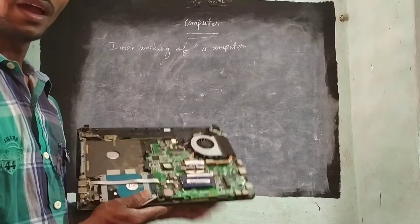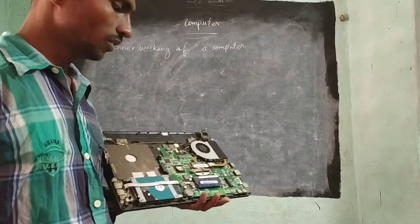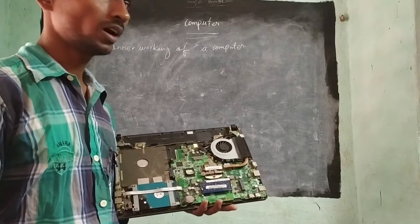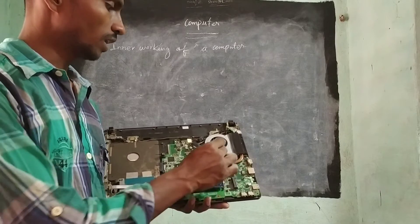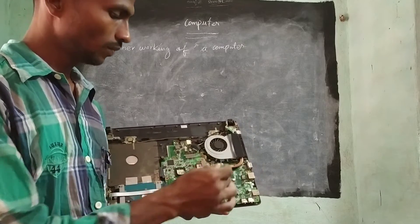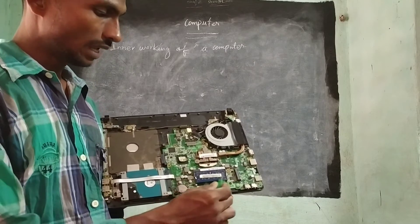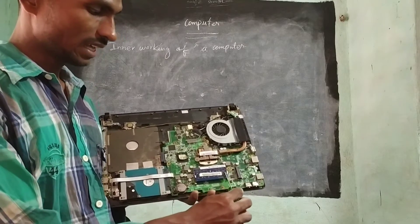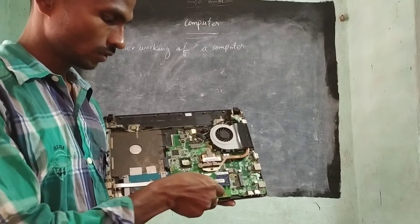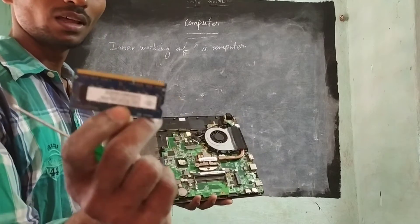Just listen. It is the internal parts of computer or inner workings of computer. It is the turbo fan. Next, it is the processor. Processor slot and processor. It is the RAM. What is it? RAM. It is RAM.